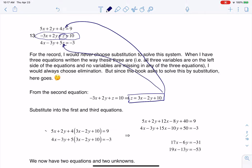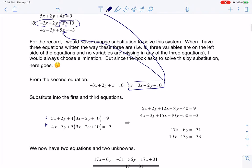That's what you see me doing on these two steps. What that will allow me then is to reduce my system to a 2 by 2. The first equation simplifies now down to 17x minus 6y being negative 31, and the third equation simplifies to 19x minus 13y equaling negative 53. If I was going to solve this system right here, I would use elimination. But they said use substitution.